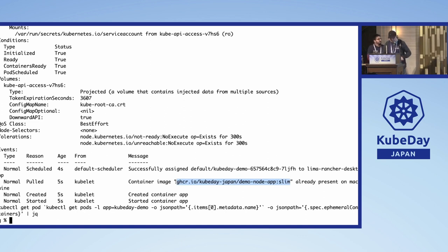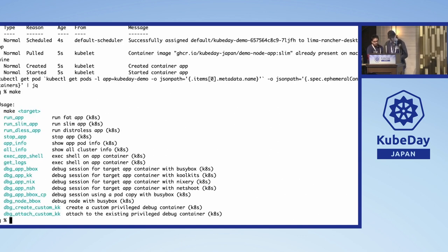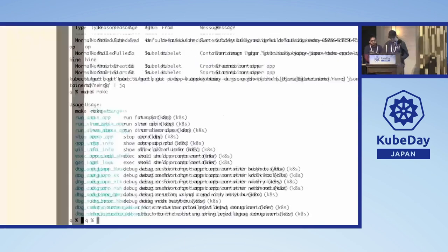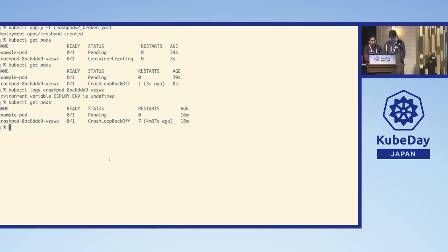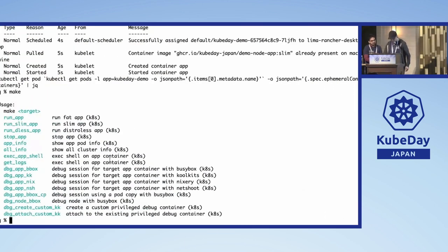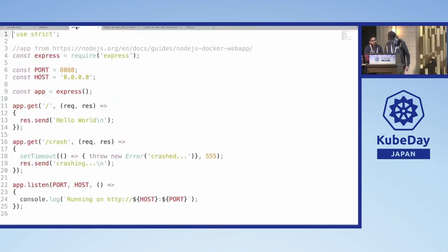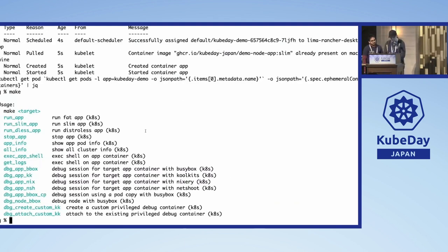First, we'll try to debug the Node application. This is a Hello World app with a couple of endpoints, and we'll try to debug one of those endpoints.